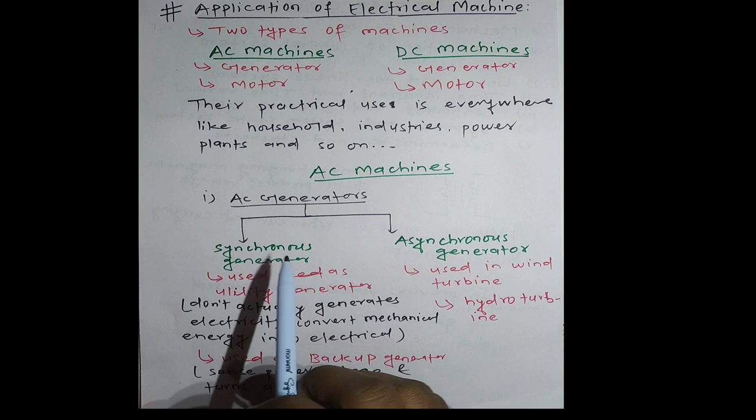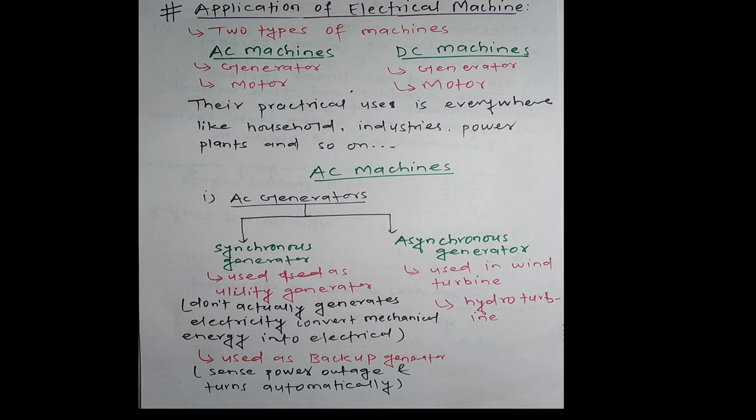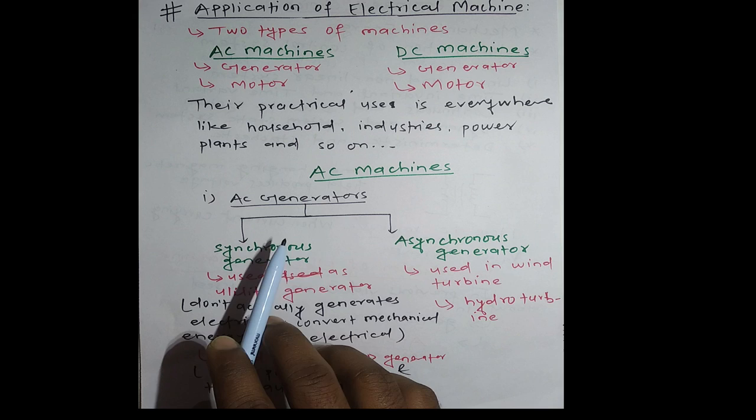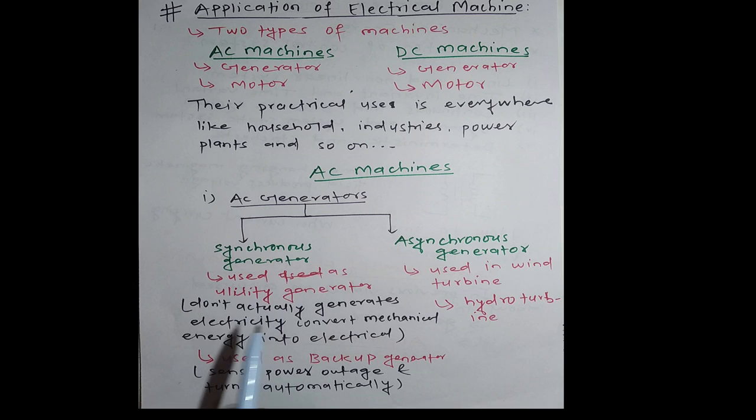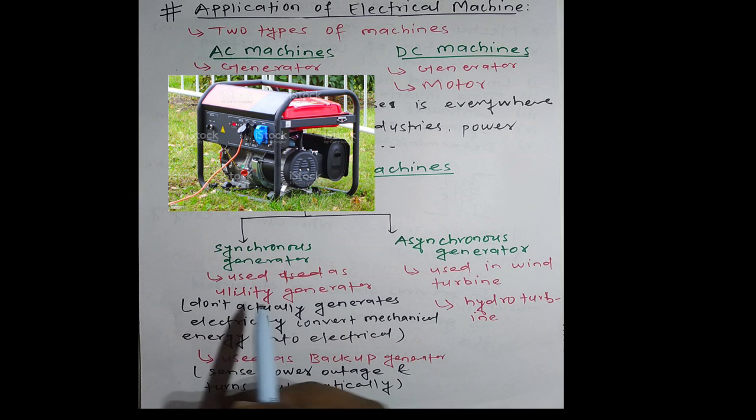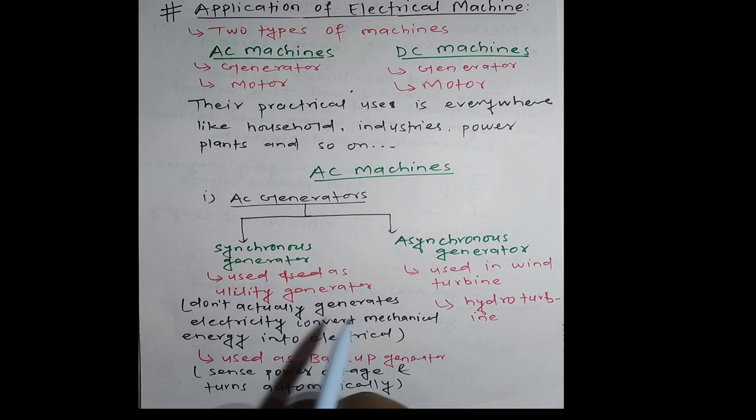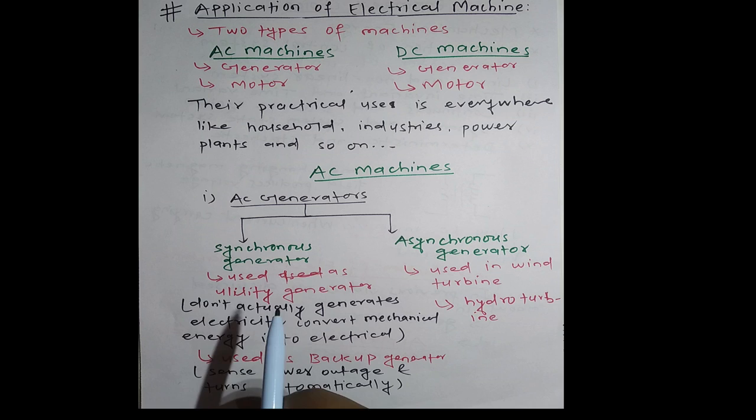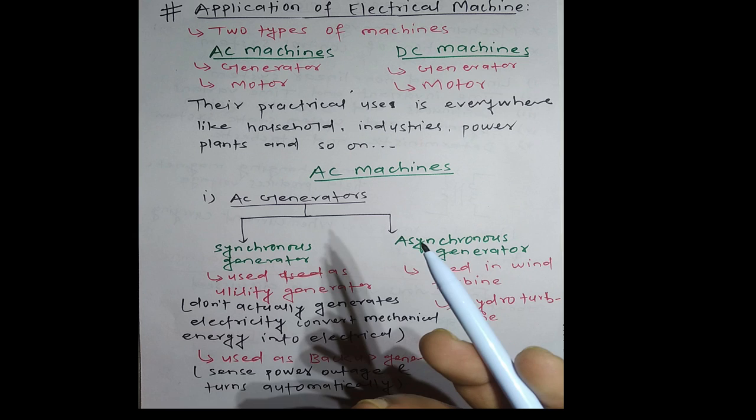AC machines—there are two types of AC machines. Let's see the application of AC generators. In AC generators, we can categorize them into two parts: synchronous generators or alternators. Let's see what the uses of synchronous generators are. Used as utility generators. Utility generators don't actually generate electricity—they convert mechanical energy into electrical energy. We can see this in our daily life and many places.